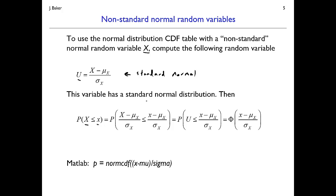If I want the probability that x is less than or equal to some number, I can take both sides of the inequality, subtract the mean, and divide by the standard deviation. The left-hand side becomes u, the standard normal random variable, and the right-hand side is just a number. We can then reuse the standard normal CDF notation, capital Φ, and look up that number either in the table or by entering NORMCDF((x − μ) / σ) in a computer program to get the desired probability.